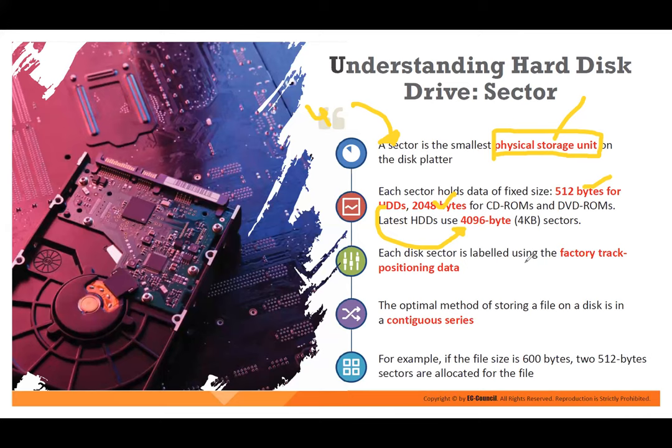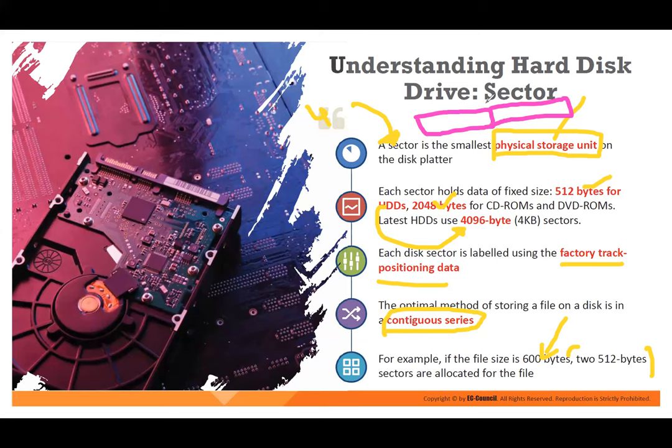Each sector is labeled with the factory track position data. The optimum method of storing a file on a disk is a continuous series — not random — because random causes empty space in between. For example, if you have a file of 600 bytes, it will take two 512-byte sectors. The first 512 bytes fill sector one, and the remaining 88 bytes go into sector two. 88 plus 512 equals 600.